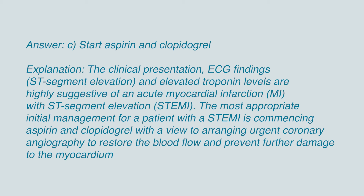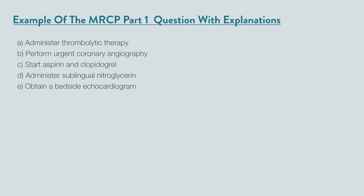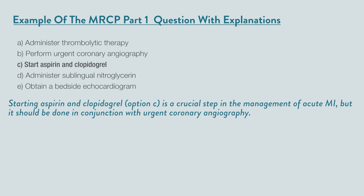The clinical findings, the ECG findings of ST segment elevation, and elevated troponin levels are highly suggestive of an acute myocardial infarction with ST segment elevation. Thrombolytic therapy is an alternative option when timely access to primary PCI is not available. Starting aspirin and clopidogrel, option C, is a crucial step in the management of acute MI.